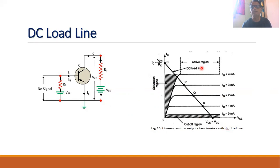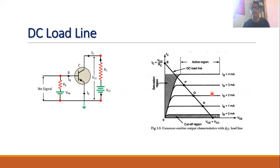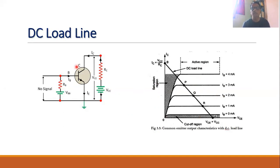Our point of interest is to operate the transistor in the active region. This region of the characteristic curve is called the active region of the transistor. In the active region, one junction of the transistor is forward biased and the other junction is reverse biased.